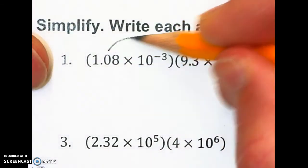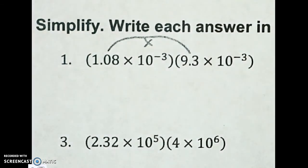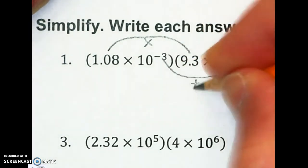You're going to take these numbers, the actual numbers in front, and multiply them. And we're going to take these powers, the negative 3 and the negative 3, and then we're going to add them together.